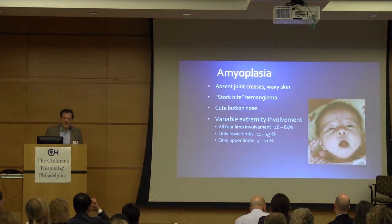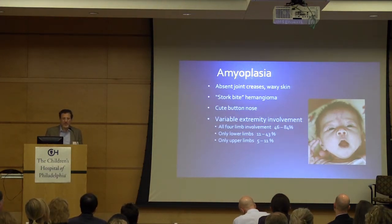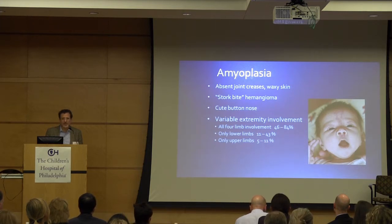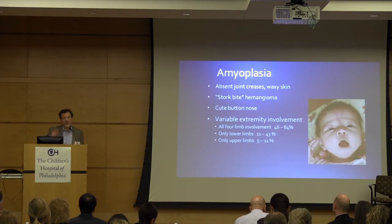What do they look like? They have absent joint creases often, waxy skin, and stork bite hemangiomas are very common. I always amaze parents when I say, do they have a little hemangioma here?